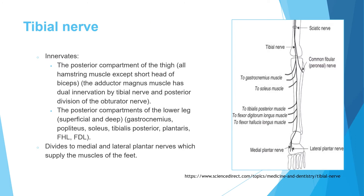The sciatic nerve divides into the tibial nerve and the common peroneal nerve. The tibial nerve supplies all the muscles in the posterior thigh except the short head of the biceps, which is supplied by the common peroneal nerve. Then it goes to the posterior lower leg, supplying the gastrocnemius, soleus, posterior tibial, flexor digitorum, and flexor hallucis muscles. It then divides into the medial and lateral plantar nerves, which supply the muscles of the foot.